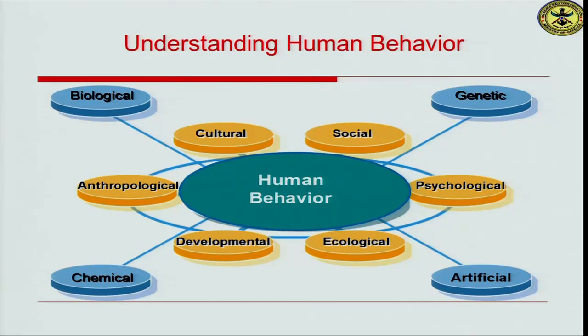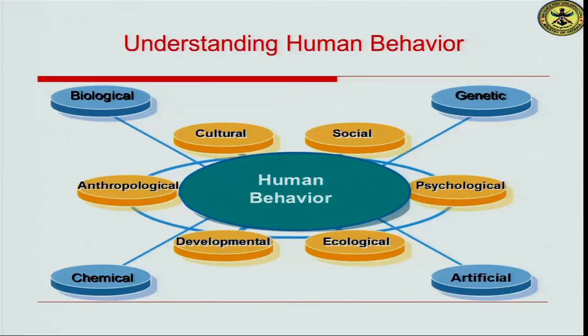On the other hand, social scientific approaches also try to understand human behavior. They include social science, cultural sciences, anthropological sciences, developmental sciences, ecological sciences, and psychological sciences. These social scientific approaches try to understand human behavior as embedded in a context or social context. My approach here would be to understand human behavior using a psychological system with inputs drawn primarily from the biological system.